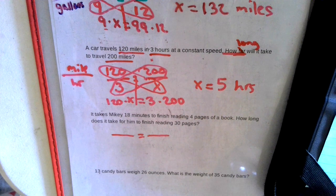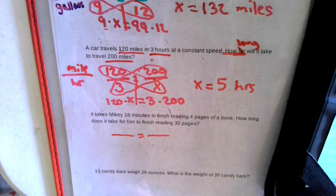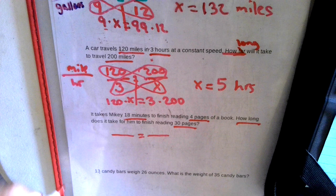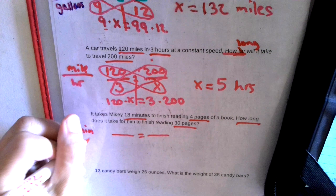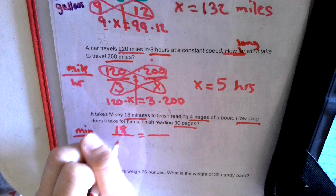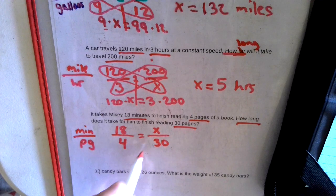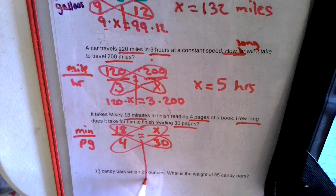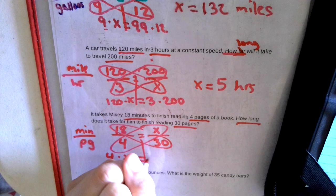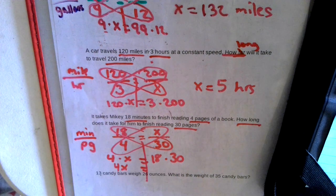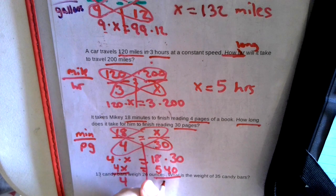It takes Mikey 18 minutes to finish reading four pages of a book. How long does it take him to finish reading 30 pages? So we have 18 minutes to four pages — how long for 30 pages? We're looking at minutes to pages, so we have 18 to four. Those two go together, and we were given pages on this one, so we are missing the top piece. We do our proportion: 4 times X equals 18 times 30. Number and letter shoved together, and then 30 times 18 gives us 540. We're going to divide by the 4.